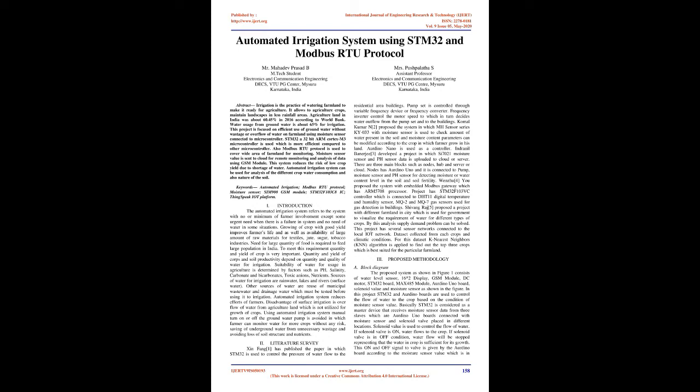STM32, a 32-bit ARM Cortex-M3 microcontroller, is used, which is more efficient compared to other microcontrollers. Modbus RTU Protocol is used to cover a wide area of farmland for monitoring. Moisture sensor values are sent to the cloud for remote monitoring and analysis using a GSM module. This system reduces the risk of low crop yield due to shortage of water. The automated irrigation system can also be used for analysis of different crop water consumption and the nature of the soil.